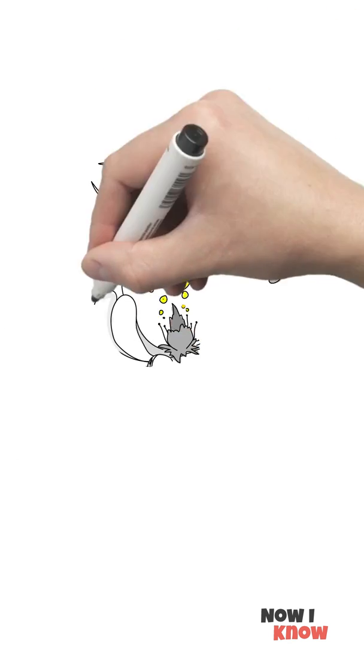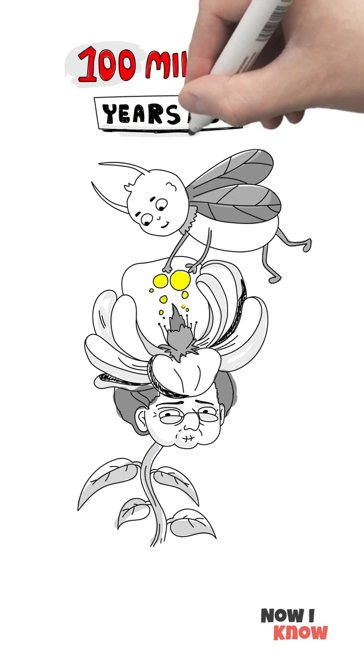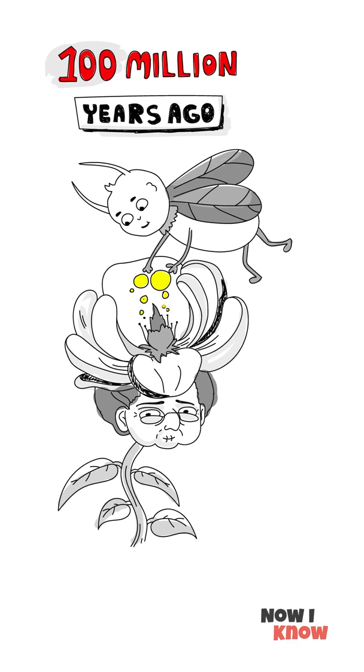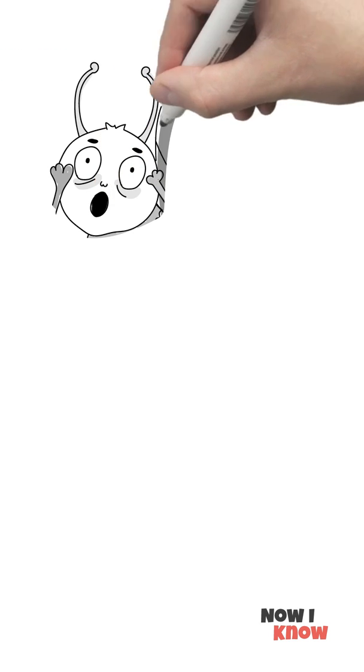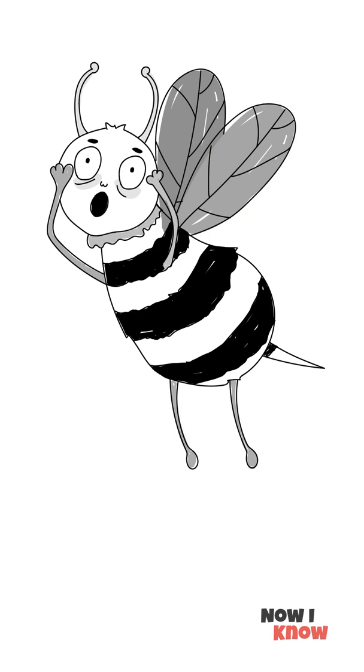Magnolia is a very ancient flower. In fact, it's so old that it was actually pollinated by beetles back in the day, meaning a hundred million years ago. That's because bees hadn't yet evolved when magnolia first appeared.